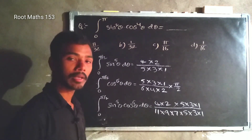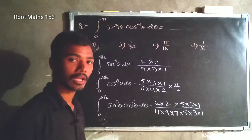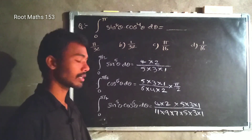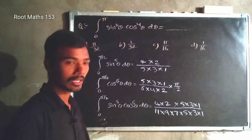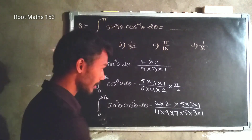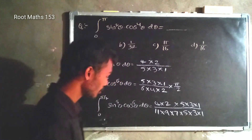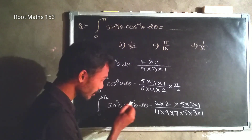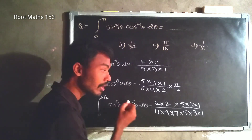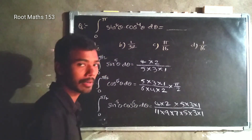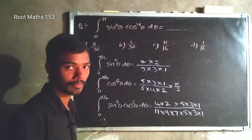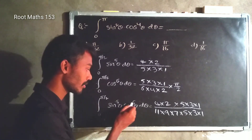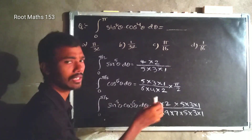The answer is 1. Now, we have pi by 2 — when both powers are even, we multiply by pi by 2. Here, one power is even and the other power is also even, so we multiply by pi by 2.